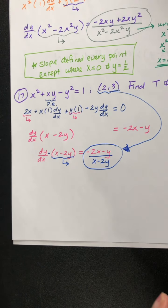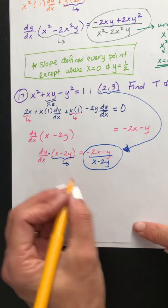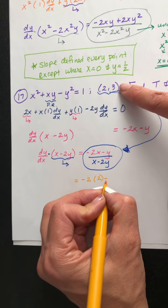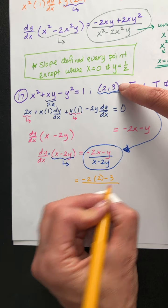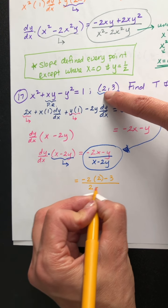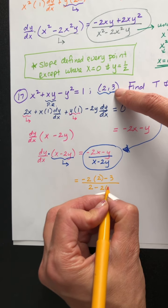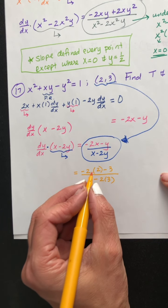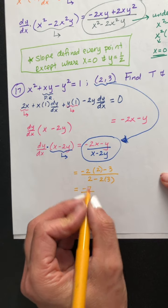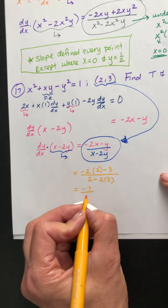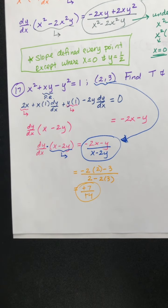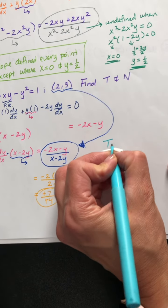Plug it in. We get negative 2 times the x value of 2, minus the y value of 3, all over x which is 2, minus 2 times the y value of 3. Negative 2 times 2 is negative 4; negative 4 minus 3 is negative 7. 2 times 3 is 6; 2 minus 6 is negative 4. Double negative equals a positive, so our slope is 7 fourths.